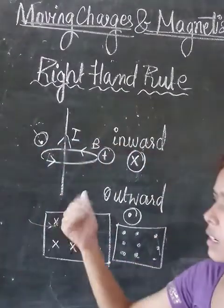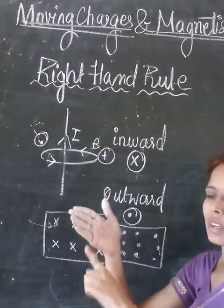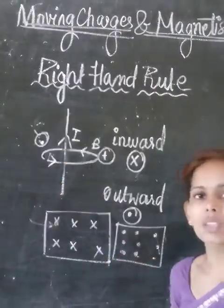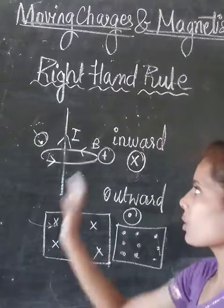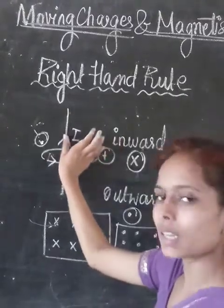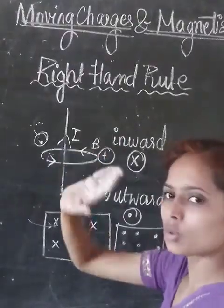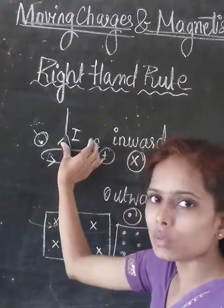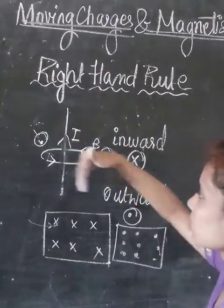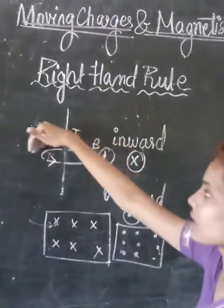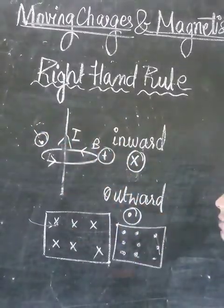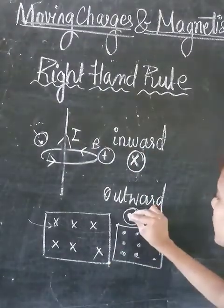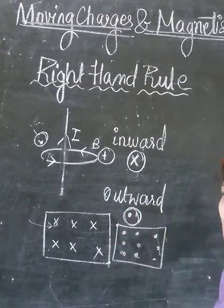To summarize the right-hand rule: the curl of the remaining four fingers shows the direction of the magnetic field, and the thumb finger shows the direction of the current I. If we put the thumb in the direction of the current, the curl of the fingers shows the magnetic field direction. The inward direction of the magnetic field is shown with the cross sign, and the outward direction is shown with the dot sign. The direction can always be determined using the right-hand rule.